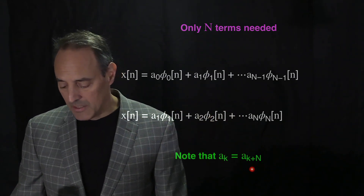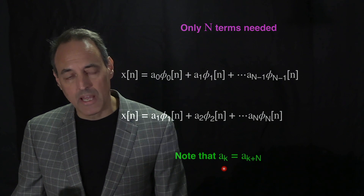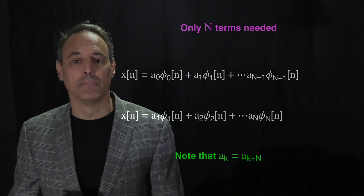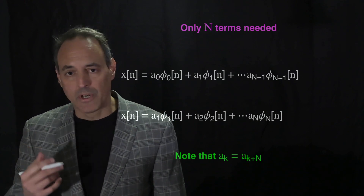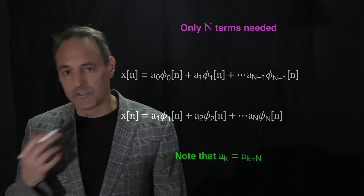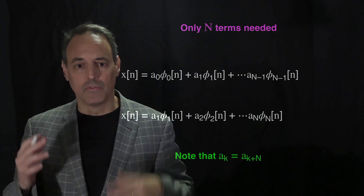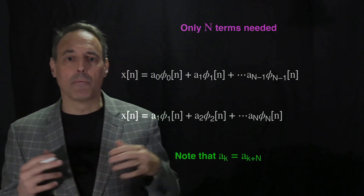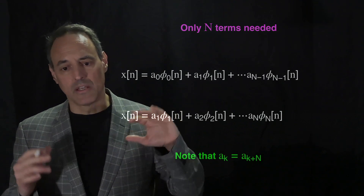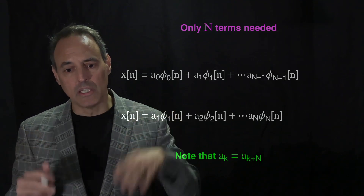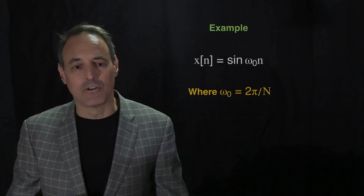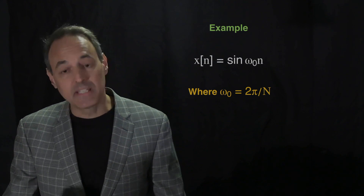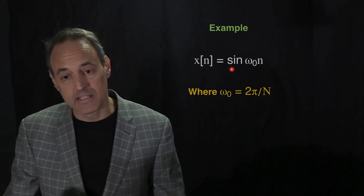An important observation: a(k) = a(k + N), meaning the coefficients are periodic. This is a really nice property of the finite representation of discrete signals — you only ever need N terms altogether.